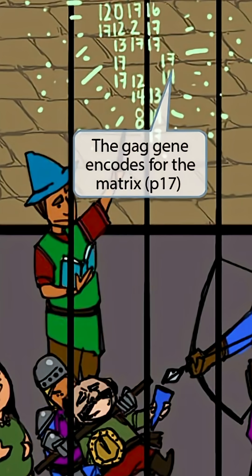The gag gene also encodes for the proteins that form the matrix, and these are known as P17. To help you remember this, we've shown a wizard that's casting a spell on these soldiers in an attempt to protect this poor dwarf. You can see him lifting up his wand and casting a complicated spell with many numbers, most of which are the number 17. All of the numbers shown this way look kind of like the matrix from the Matrix movie. The wizard casting a matrix spell should make you think of the matrix, the number 17 should help you remember P17, and the gagging dwarf should help you remember the gag gene. So all these ideas together should help you remember that the gag gene encodes for the matrix, which is formed by proteins known as P17.